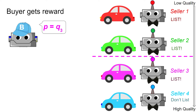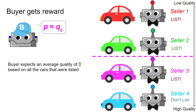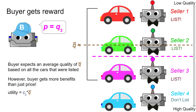The buyer similarly gets a net reward. The buyer expects an average quality of Q-bar based on all the cars that were listed. As these were the cars listed in this market, the buyer would expect the average quality Q-bar to be right about here. However, the buyer gets more benefits than just the market value of the car — think about when you're buying a car, you get the utility of the car, perhaps you like the way the interior feels or the color looks. So we say the utility the buyer gets is actually a multiplier of Q-bar known as C2. This is what allows the game to be iterative dominant solvable. Thus, the net reward for the buyer ends up being C2 times Q-bar minus the price the buyer had to pay for the car.